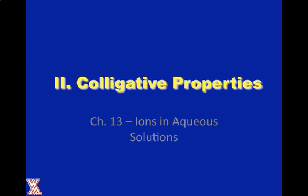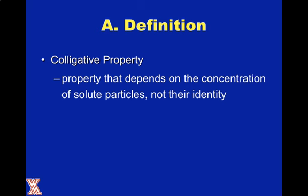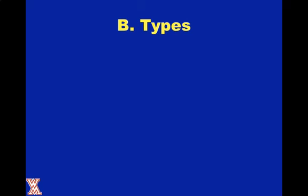Last part of chapter 13, and this finishes up our solutions discussion. It's going to be on colligative properties. A colligative property depends on the concentration of solute particles, not their identity. So if we put more particles in, that physical or chemical property will change — that's known as a colligative property.